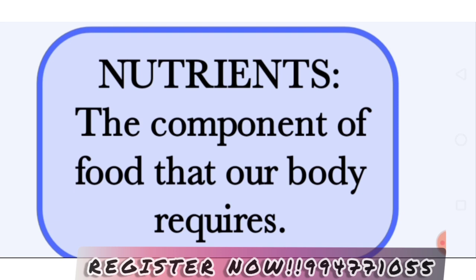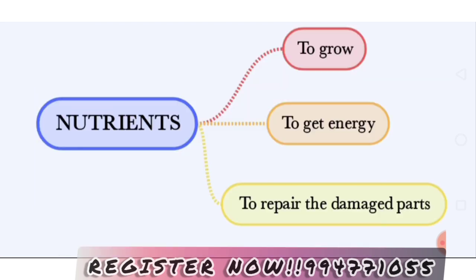Food provides nutrients that our body requires. We have to remember the components of food that our body requires. What nutrients are we talking about? To grow, to get energy, to repair the damaged parts — that's why we need nutrients in our body.